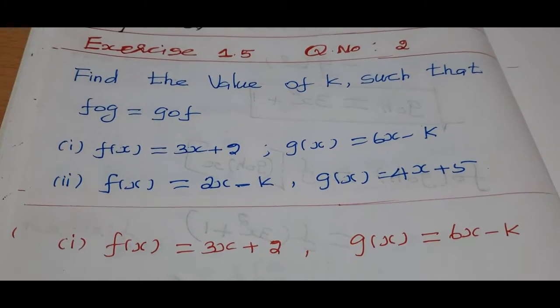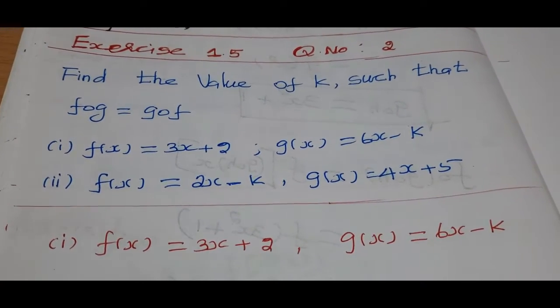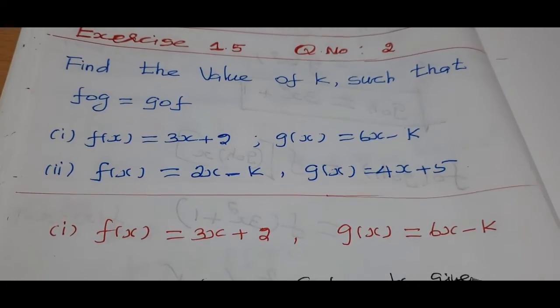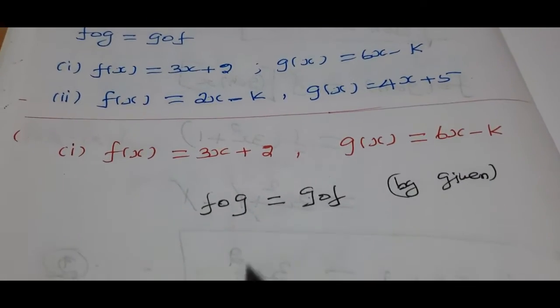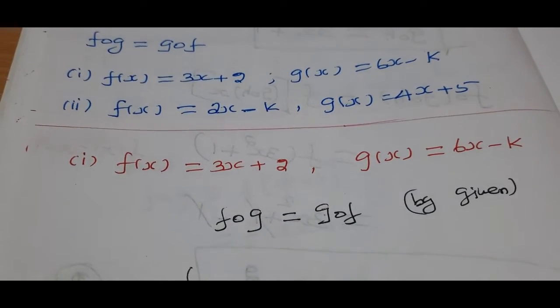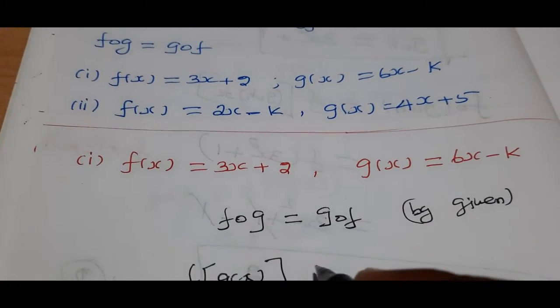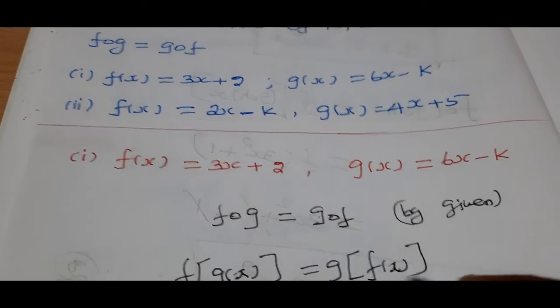Now let's go to the question. In the question, let's write f dot g is equal to g dot f. The given condition f dot g equals g dot f, how do we change this? f of g of x equals g of f of x.